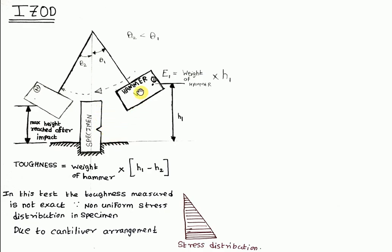This notch is provided to the specimen so that when the hammer hits the specimen, the specimen breaks from this point. And if we don't provide this notch and the hammer hits the specimen, the specimen may break from the point at which it is clamped or it is fixed.